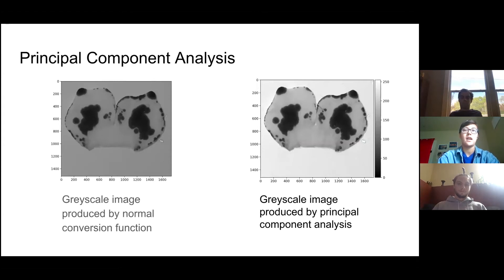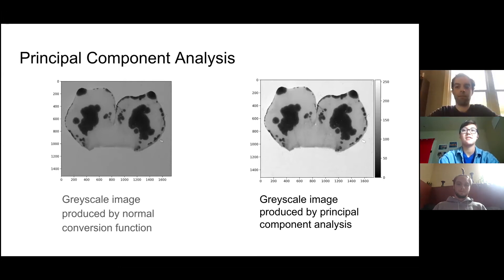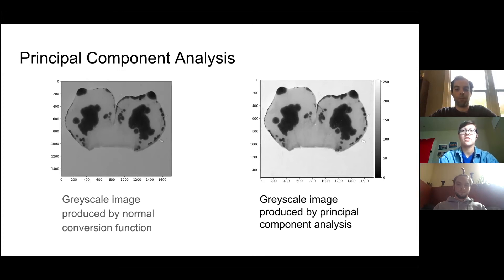On the left is the grayscale image produced by a normal conversion function — projected along the middle axis. When we project along our better PCA axis, we get the image on the right, which maps the palest colors to white and the darkest colors to gray, rather than mapping everything to a brownish tone as the standard algorithm would. This produces a much clearer image.